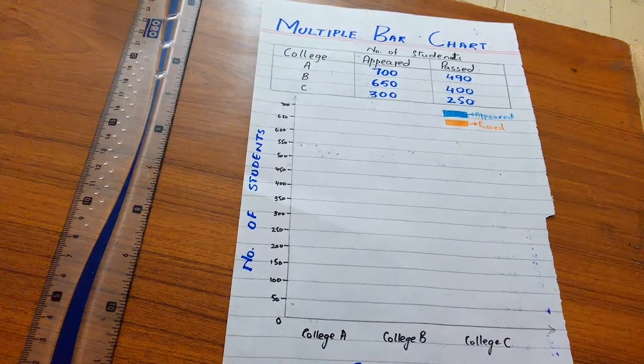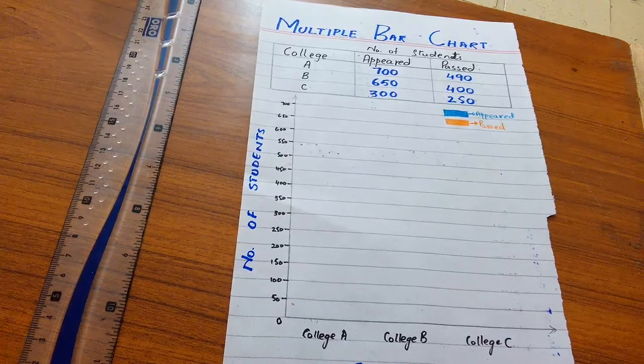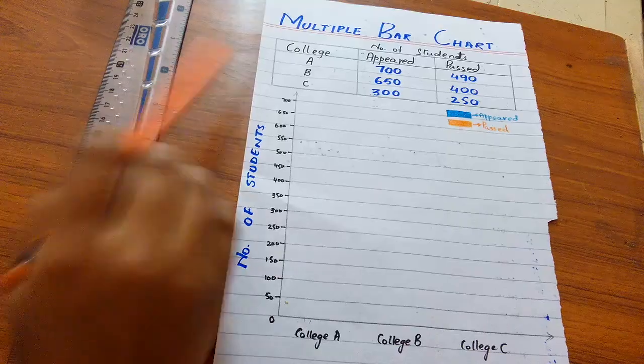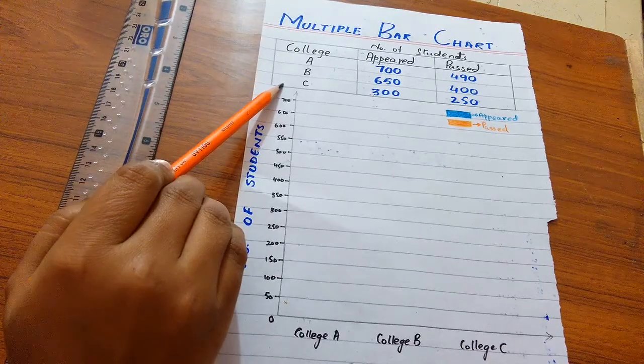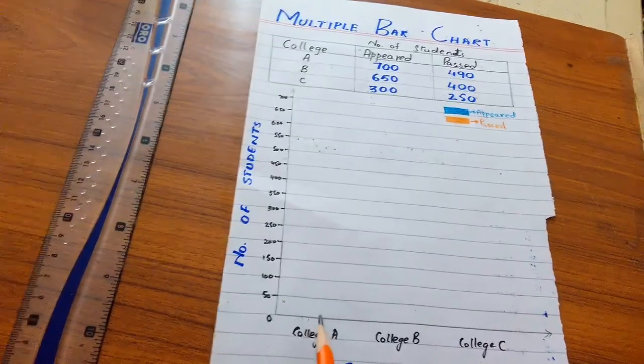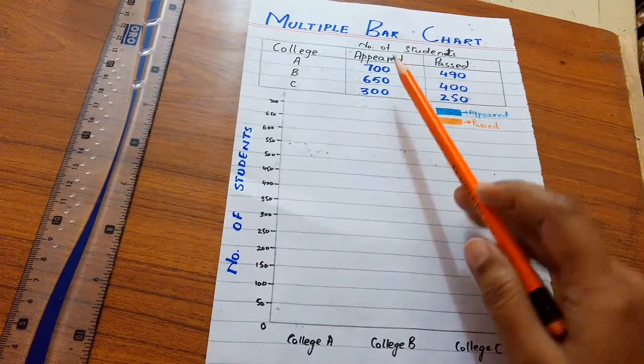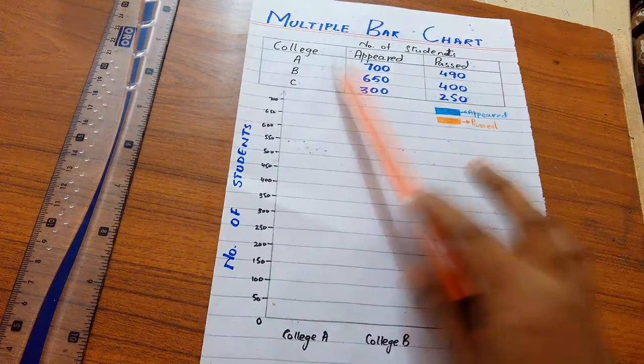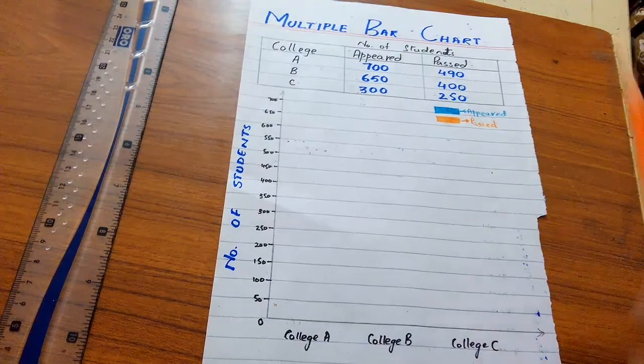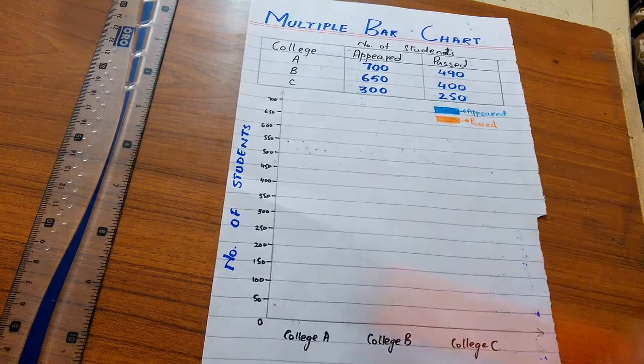In multiple bar chart, separate bars are drawn for each phenomena. I have a dataset of college A, college B, college C, so these are three phenomena. I will construct separate graphs for these. The number of students appeared in the exam from college A and the number of students passed the exams from college A are related phenomena, so I construct their bars combinedly.